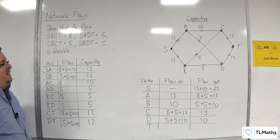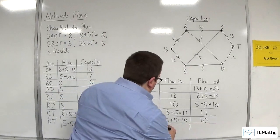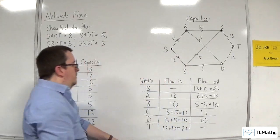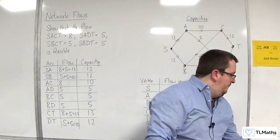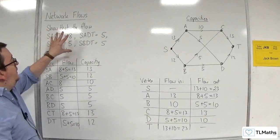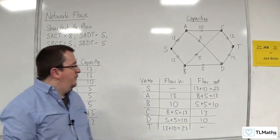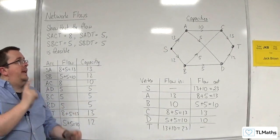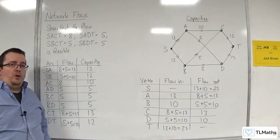Finally, the flow into T is CT and DT: 13 plus 10, which is 23. There's no flow going out of T. So by filling out this table we've found that this is feasible, and the flow that goes through the system is 23. The question now is: can we improve upon 23?